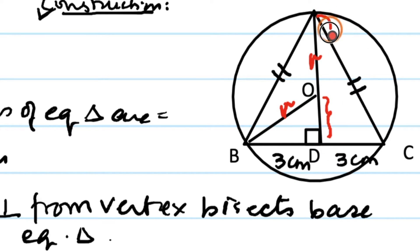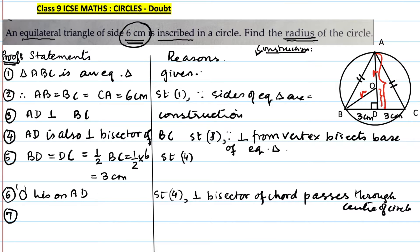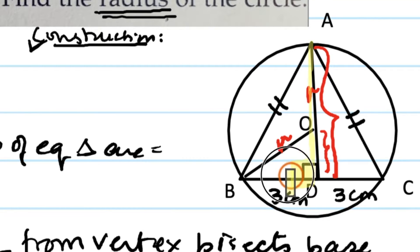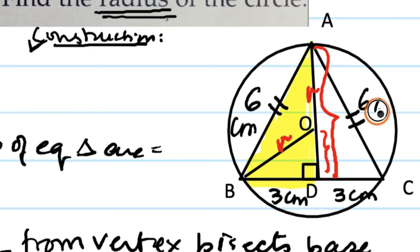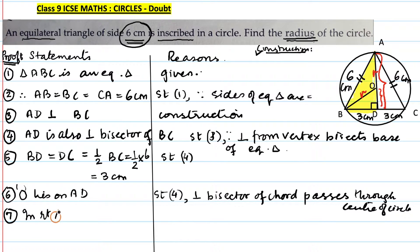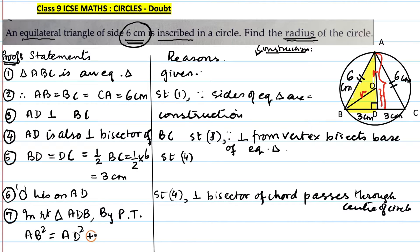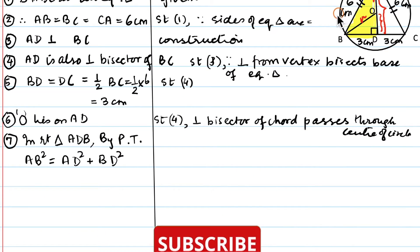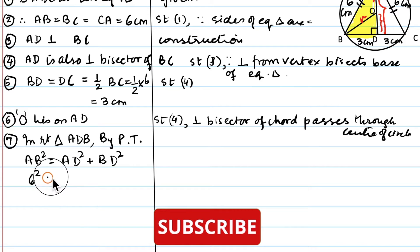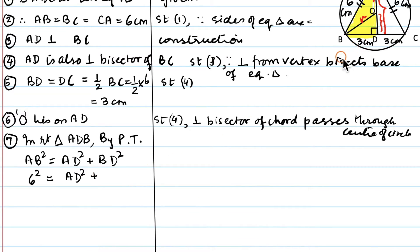To find AO (the radius), we first need the length of AD. In right triangle ADB, we know AB = 6 cm and BD = 3 cm. By Pythagoras theorem: AB² = AD² + BD², so 6² = AD² + 3², giving 36 = AD² + 9.